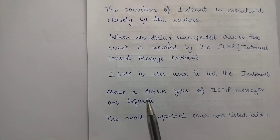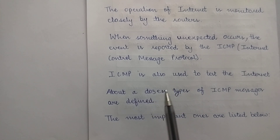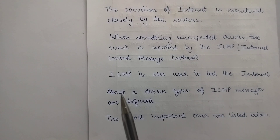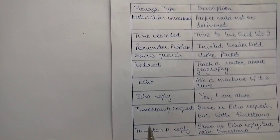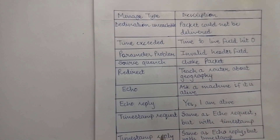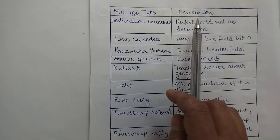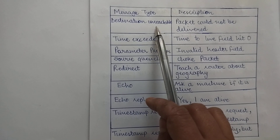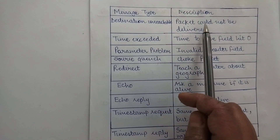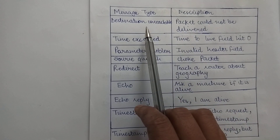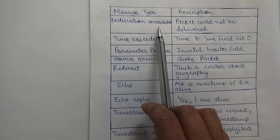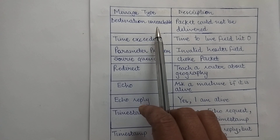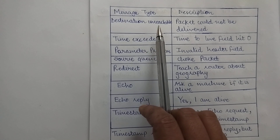There are various kinds of ICMP messages defined for various purposes. We will look at them by message type and their description. There are several types of messages, each with its own description.